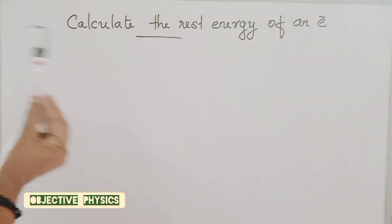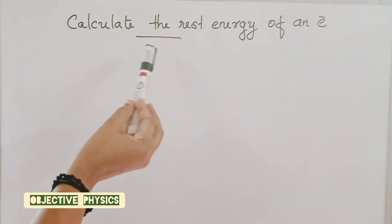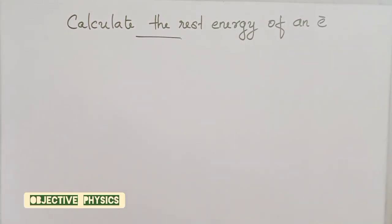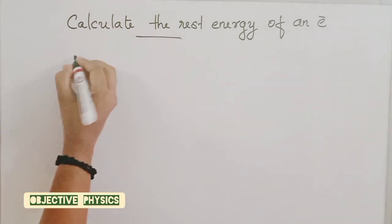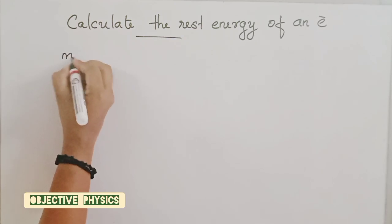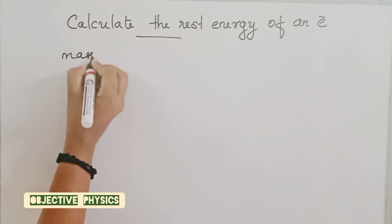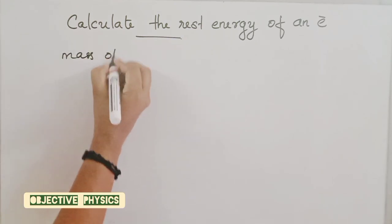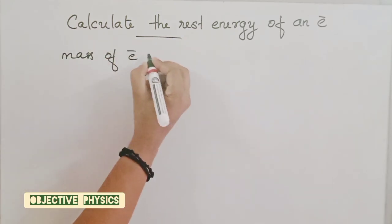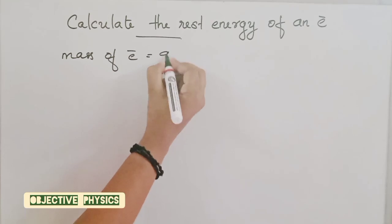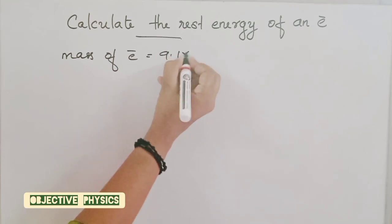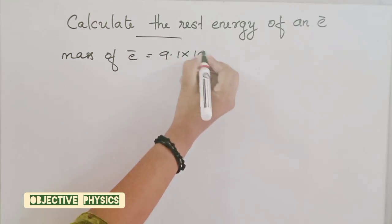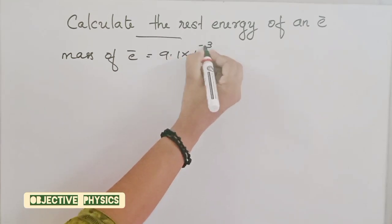Next question: calculate the rest mass energy of an electron. The mass of an electron is equal to 9.1 × 10⁻³¹ kilogram.